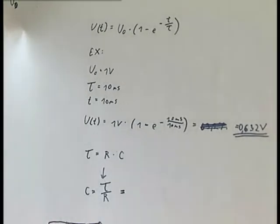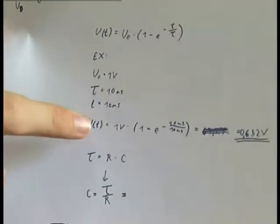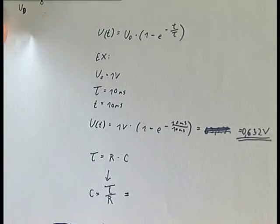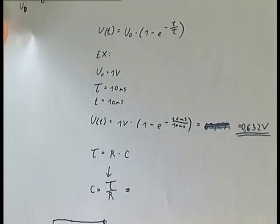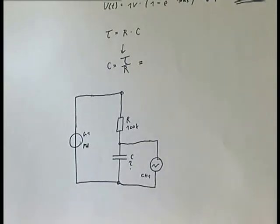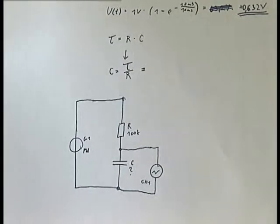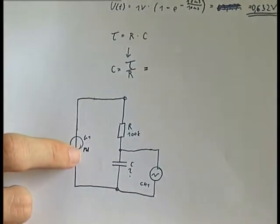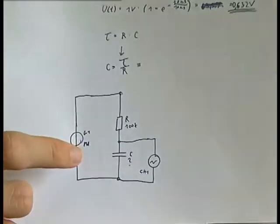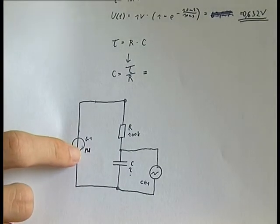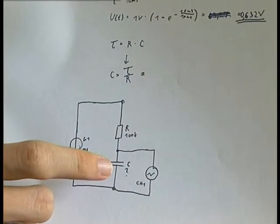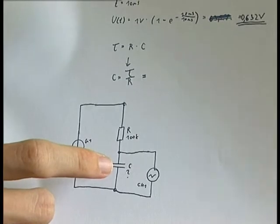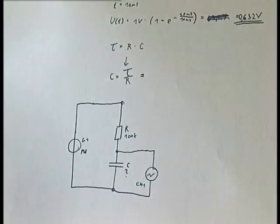Now we come to the practical part of measuring the capacitance. We can say tau equals R times C, and if we rearrange this formula we get C equals tau divided by R. This is the circuit I am using: a function generator generating a square wave, a 100k ohm resistor, and a capacitor with an unknown value, with my oscilloscope connected across the capacitor.